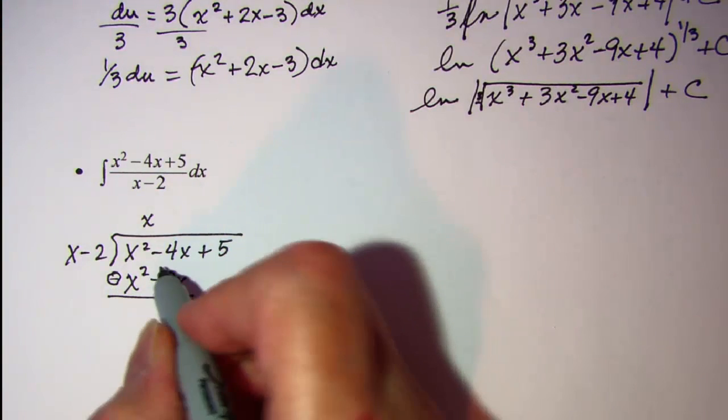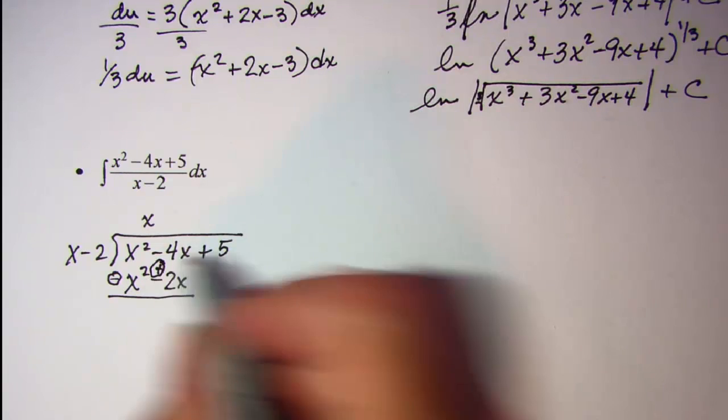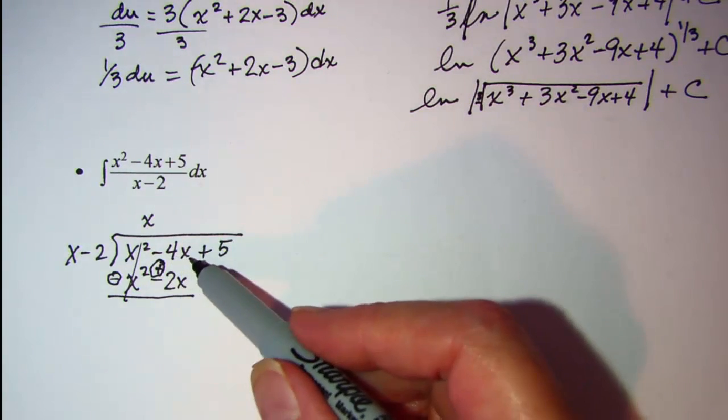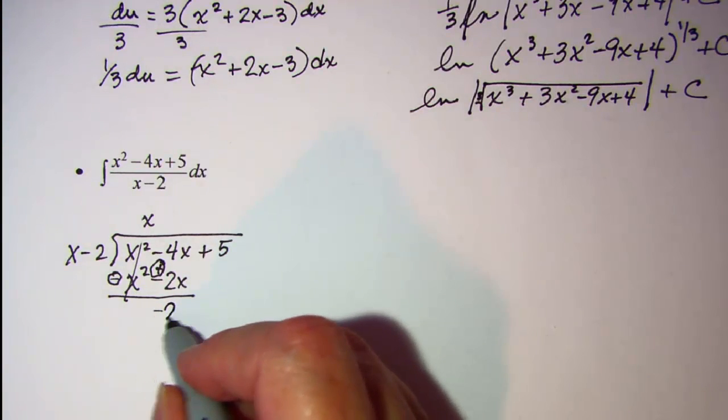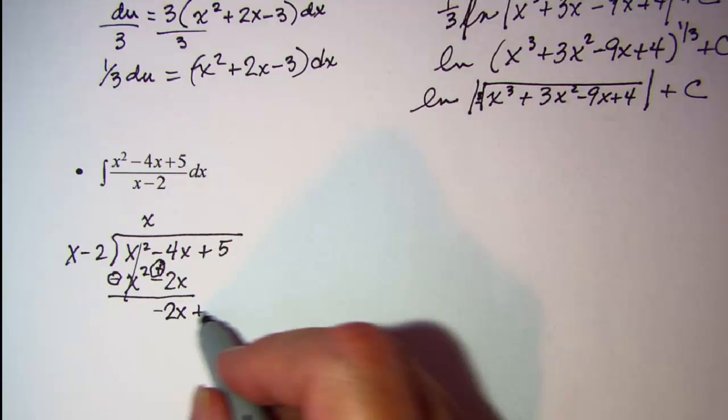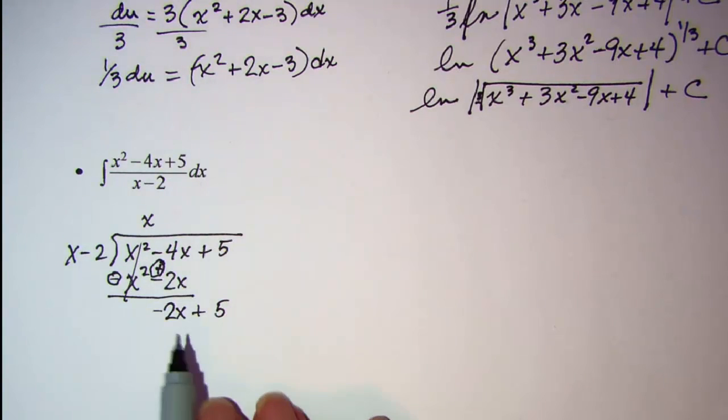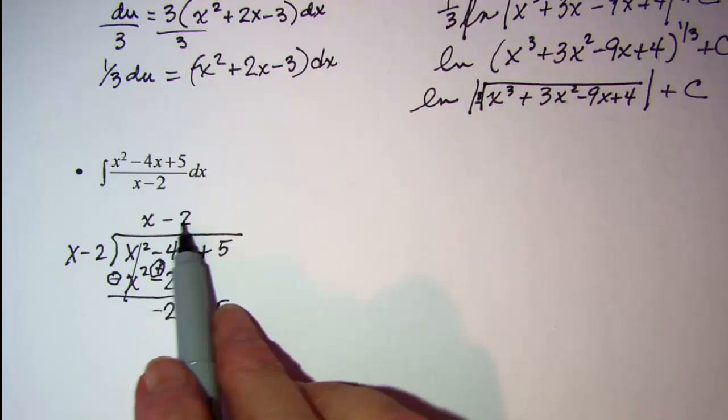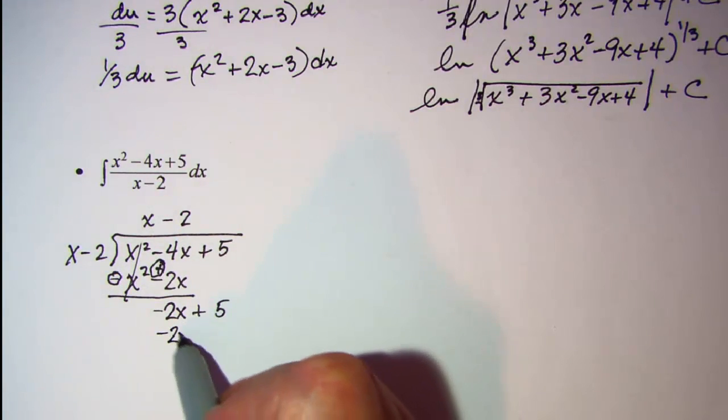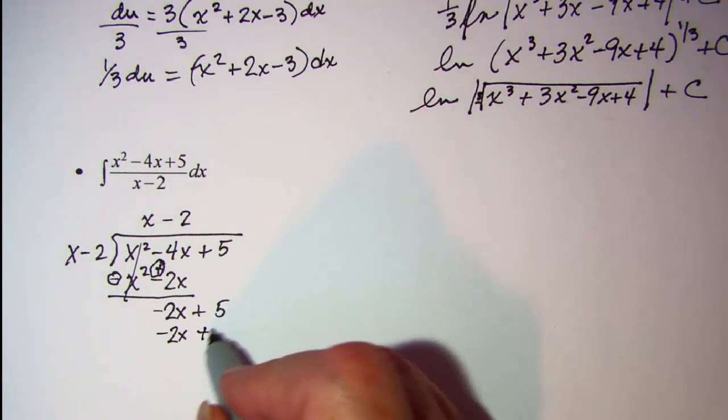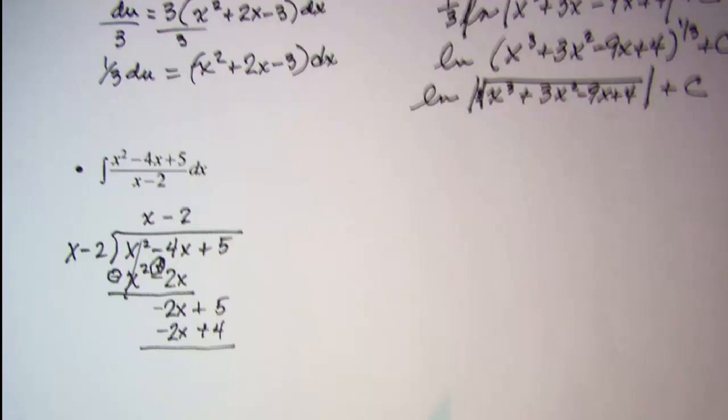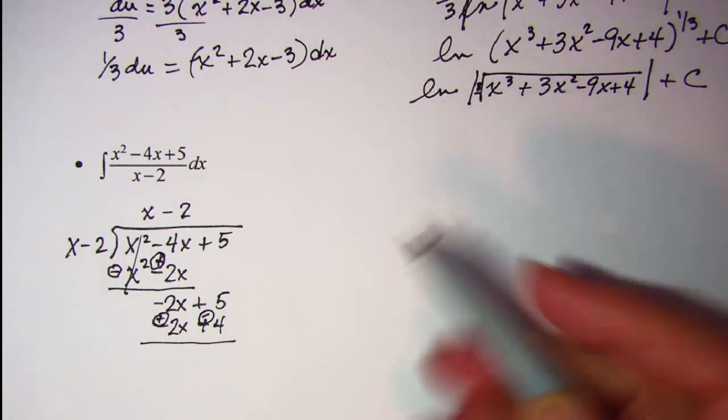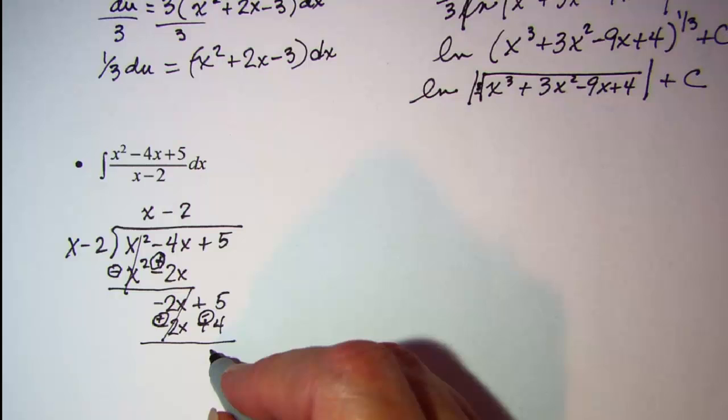I change x squared to negative x squared and this minus to a plus. Positive x squared and negative x squared cancel, negative 4x and positive 2x is negative 2x, then I bring down my next term. Negative 2x divided by x is negative 2. Negative 2 times x is negative 2x, negative 2 times negative 2 is positive 4. Subtracting, these cancel and I have 5 minus 4 which is 1.